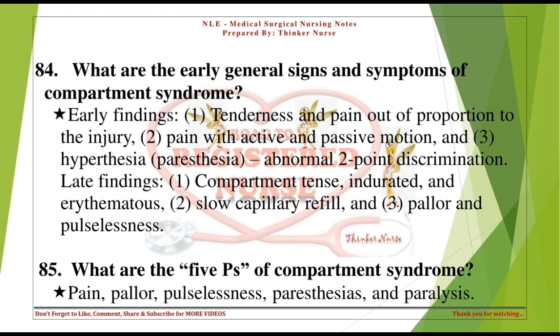What are the 5 Ps of compartment syndrome? Pain, pallor, pulselessness, paresthesias, and paralysis.